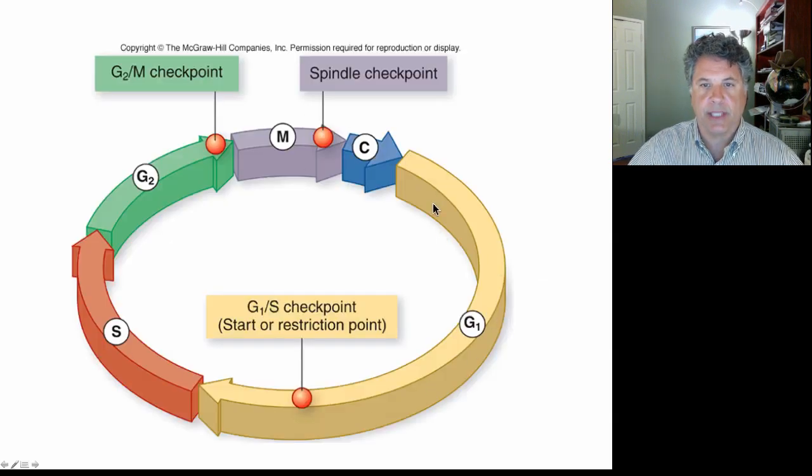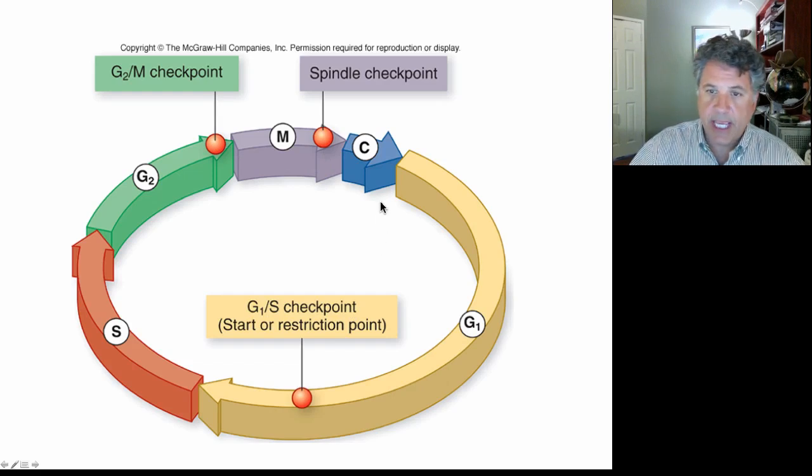Here is a schematic of the cell cycle and we will talk about these restriction points which represent points at which the cell is asking questions of itself. It's asking as the cell proceeds through the cell cycle and on the route to cell division during cytokinesis, are things okay? For example, at the G1/S checkpoint, this is called the start or the restriction point, the cell is asking itself, am I ready to synthesize new DNA?